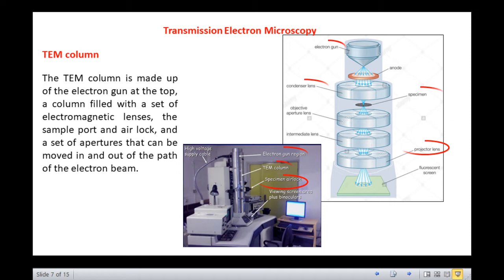The entire contents of the TEM column are under vacuum as electrons have insufficient energy to pass through gas and water molecules. This vacuum is achieved by oil diffusion pumps backed up by rotary pumps.